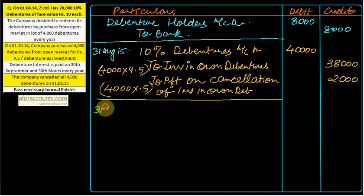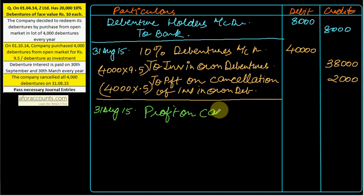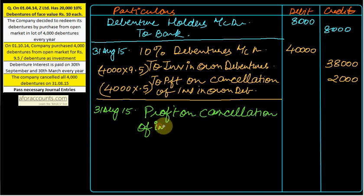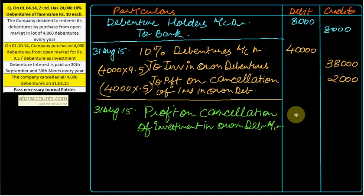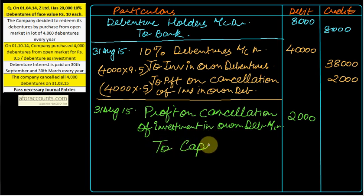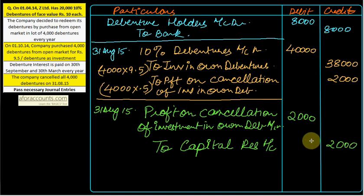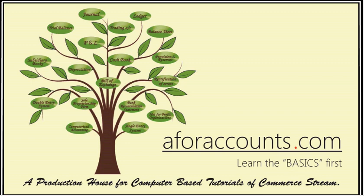On the same date, 31st August 2015, transfer the profit on cancellation. Entry: Profit on Cancellation of Investment in Own Debentures Account debit Rs. 2,000, To Capital Reserve Account Rs. 2,000. Profit on cancellation of debentures transferred to Capital Reserve.